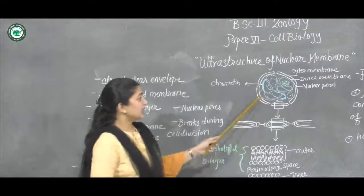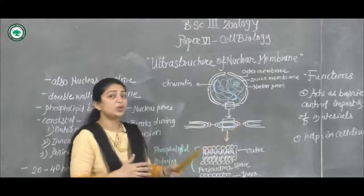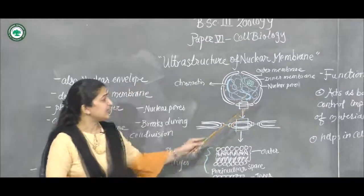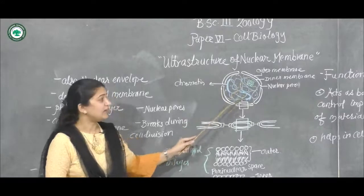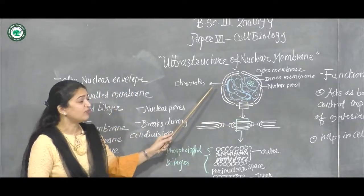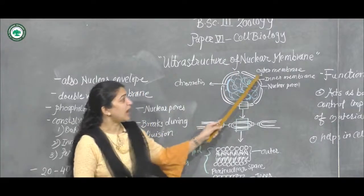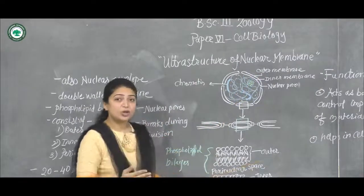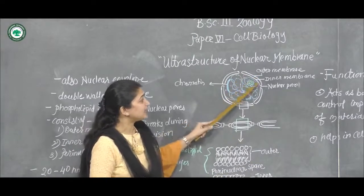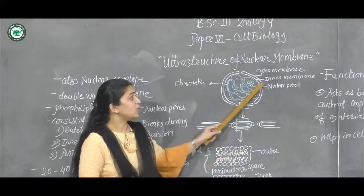Here I would like to show you the structure of the nucleus. In the previous lecture I told you the details about the location, size, and shape of different kinds of nuclei. Today we are going to concentrate on the double-layered membrane. The outer covering facing the cytoplasm of the cell is called the outer membrane, and the inner lining facing the nucleoplasm is called the inner membrane.